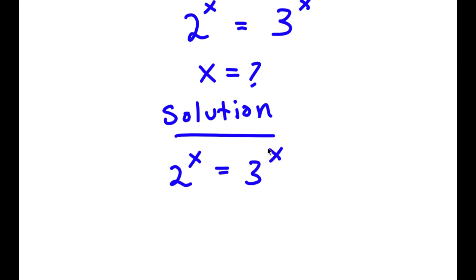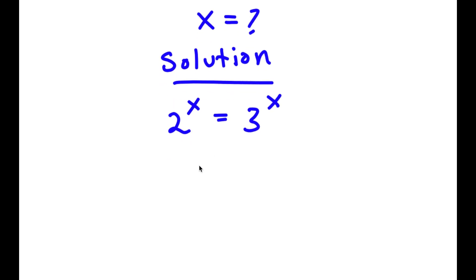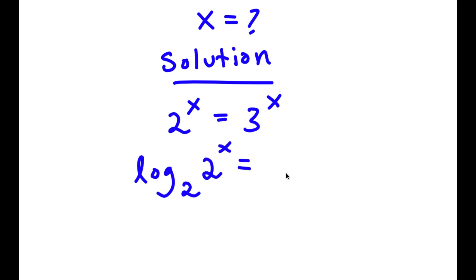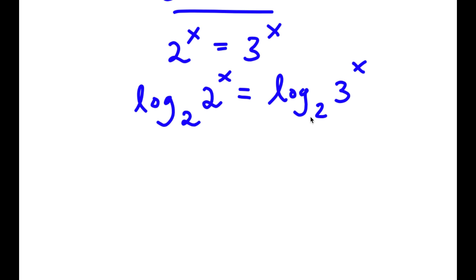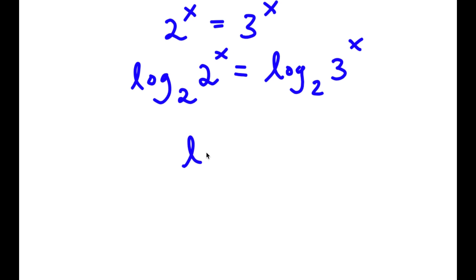I'm going to take the log base 2 on both sides. So now I have log base 2 of 2 to the power of x is equal to log base 2 of 3 to the power of x. Now, if I have something in the form log base a of a, this is simply equal to 1.